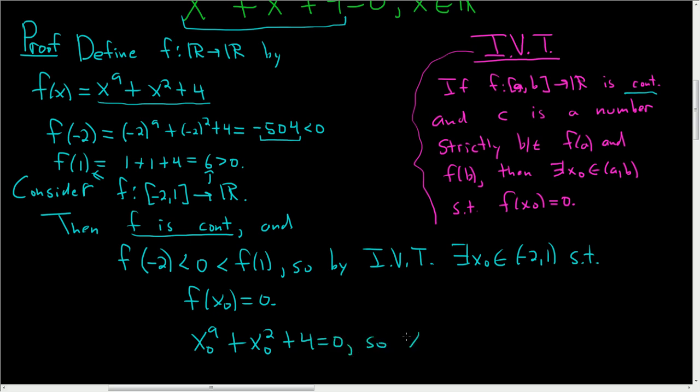So x0 is a solution to x to the 9th plus x squared plus 4 equals 0. So kind of rigorous.